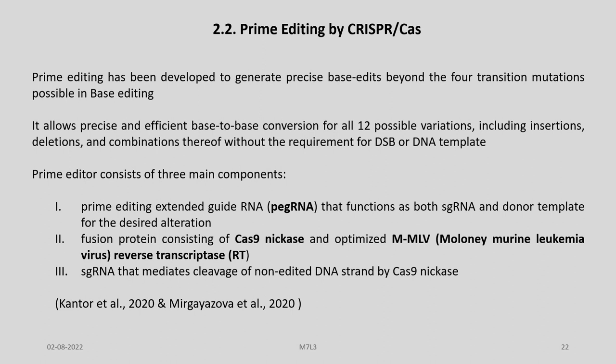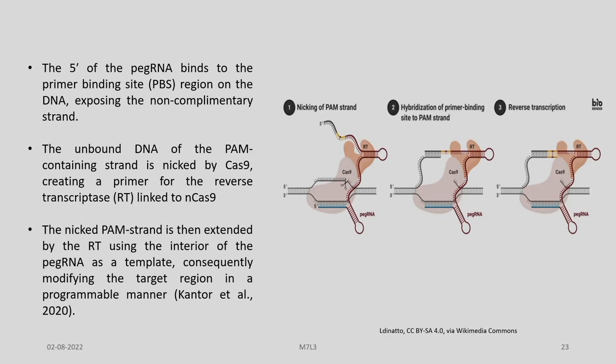Let us now discuss about prime editing by CRISPR-Cas9. Prime editing has been developed to generate precise base edits beyond the four transition mutations possible in base editing. It allows precise and efficient base-to-base conversion for all 12 possible variations including insertions, deletions, and combinations thereof, without the requirement for double-strand breaks or a DNA template. The prime editor consists of three main components: a prime editing extended guide RNA (pegRNA) that functions as both a single guide RNA and donor template; a fusion protein consisting of Cas9 nickase and an optimized MMLV reverse transcriptase; and a single guide RNA that mediates cleavage of the non-edited DNA strand by Cas9 nickase.